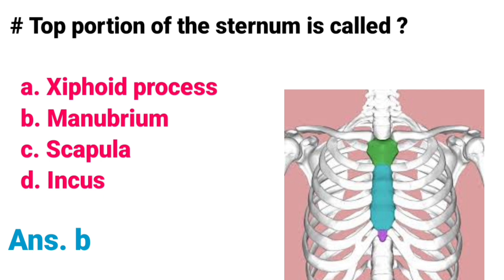The top portion of the sternum is called: A) Xiphoid process, B) Manubrium, C) Scapula, D) Incus. Correct answer is option B, Manubrium. The top portion of the sternum is called the manubrium.